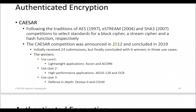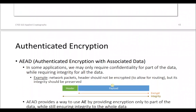There was a competition starting in 2012 and concluding around 2019 with 24 submissions, of which six were chosen. For lightweight applications, ASCON and ACORN were selected. For high-performance applications balancing efficiency and security, AEGIS and OCB were chosen. DEOXYS-II focuses more on security and may be less lightweight.